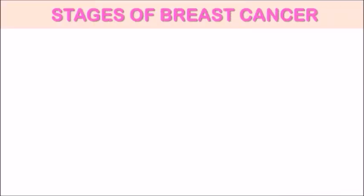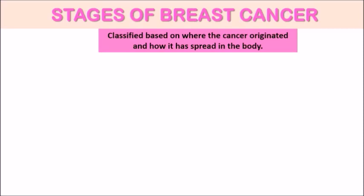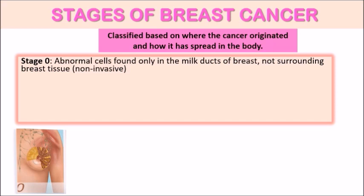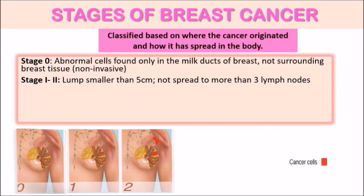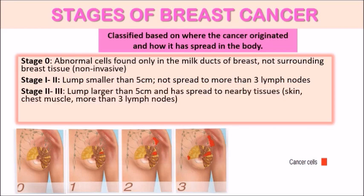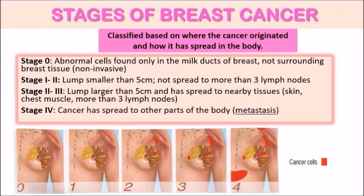What are the stages of breast cancer? This cancer is classified based on the point of origin and the extent to which it has spread in the breasts and the rest of the body. At stage zero, abnormal cells are found only in the milk ducts of the breast, not surrounding breast tissue — it's non-invasive. At stages one to two, the lump may be smaller than five centimeters and has not spread to more than three lymph nodes. At stages two to three, lumps are larger than five centimeters and have spread to nearby tissues such as the skin, chest muscle, and more than three lymph nodes. At stage four, the cancer has spread to other parts of the body, known as metastasis.